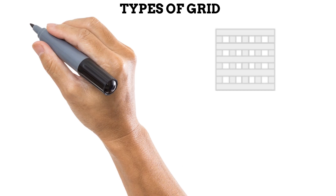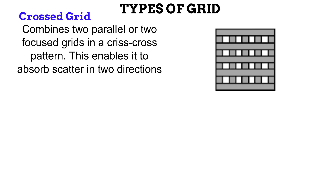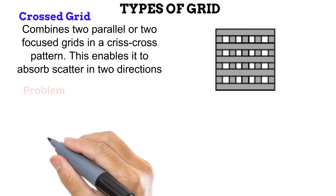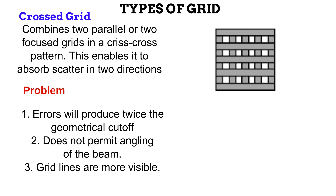The next type is the crossed grid. In this type, two parallel or two focused grids are combined so that their lead strips intersect each other at 90 degrees, giving it the resemblance of a chessboard when viewed from above. It is designed to absorb scatter in two directions. The problem is that because it has twice the lead strips, any error in its use will produce twice the geometrical cutoff. Also, because the lead strips are in two directions, you cannot angulate the beam — only straight X-ray beams can be used. The presence of more lead strips also makes them more visible, producing reduced detail.